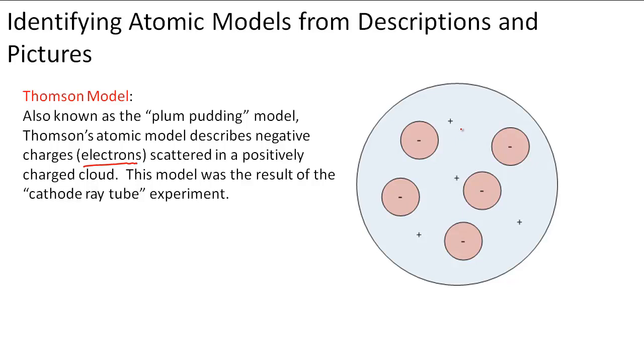So this is the plum pudding model. Because he's English, there is something called the plum pudding, which would have the pudding here. So think of this white space as pudding with the positively charged cloud that he's talking about. And these are the negatively charged electrons that are in the plums in the pudding.